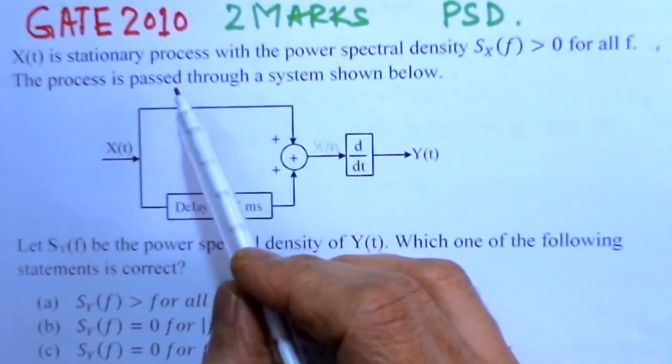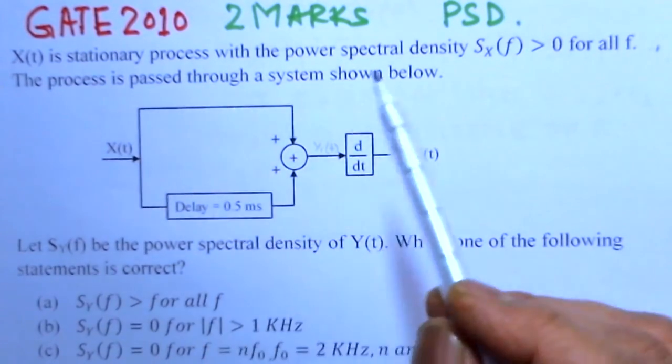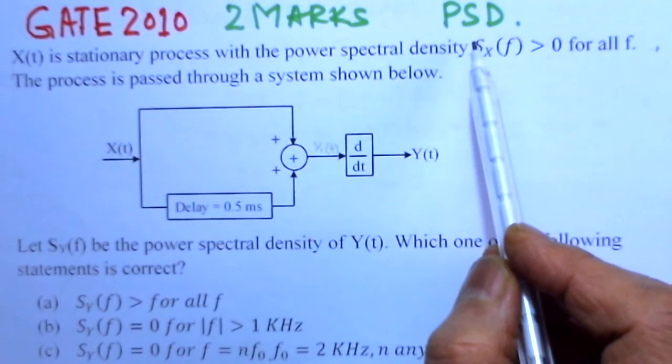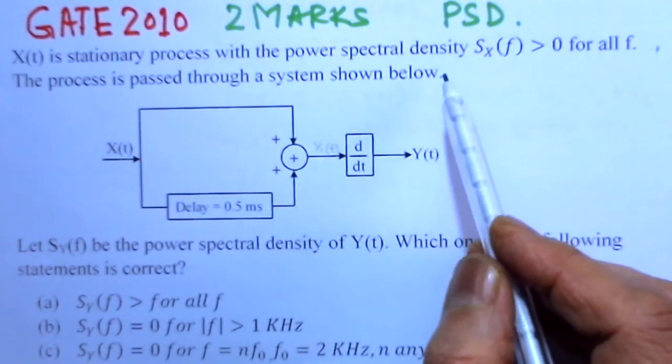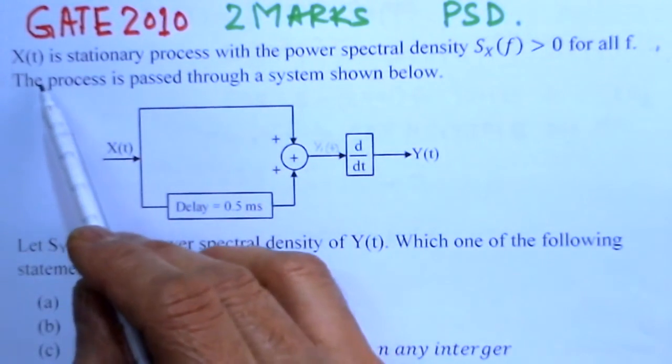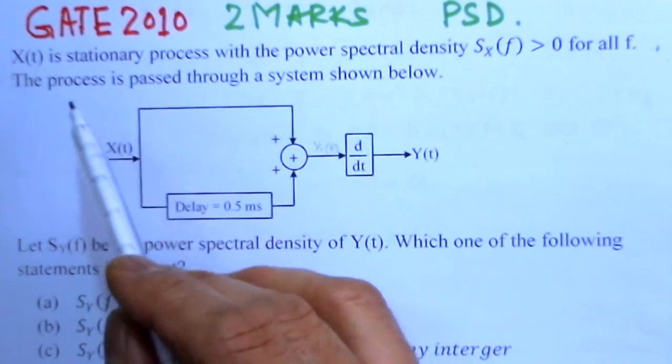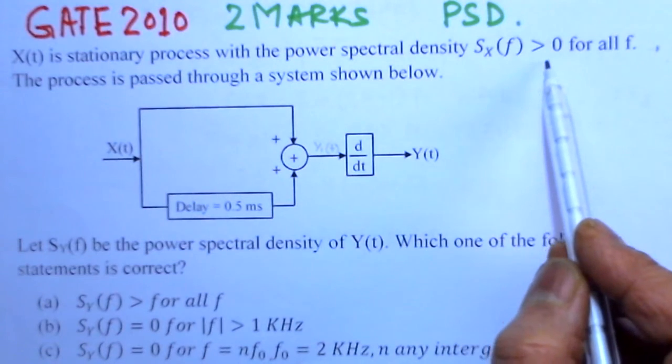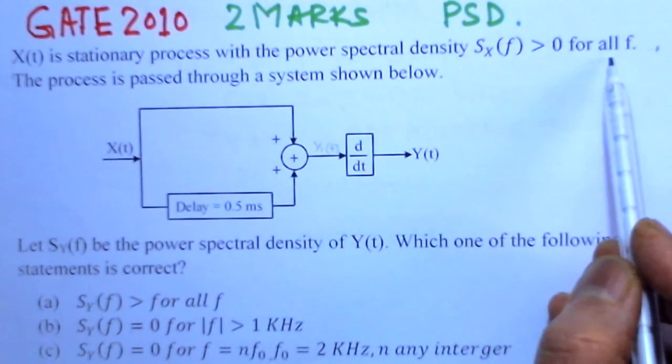The present problem is from GATE 2010, worth two marks, and basically deals with power spectral density. First we read out the problem. Here X(t) is a stationary process with power spectral density SX(f) greater than 0 for all f.